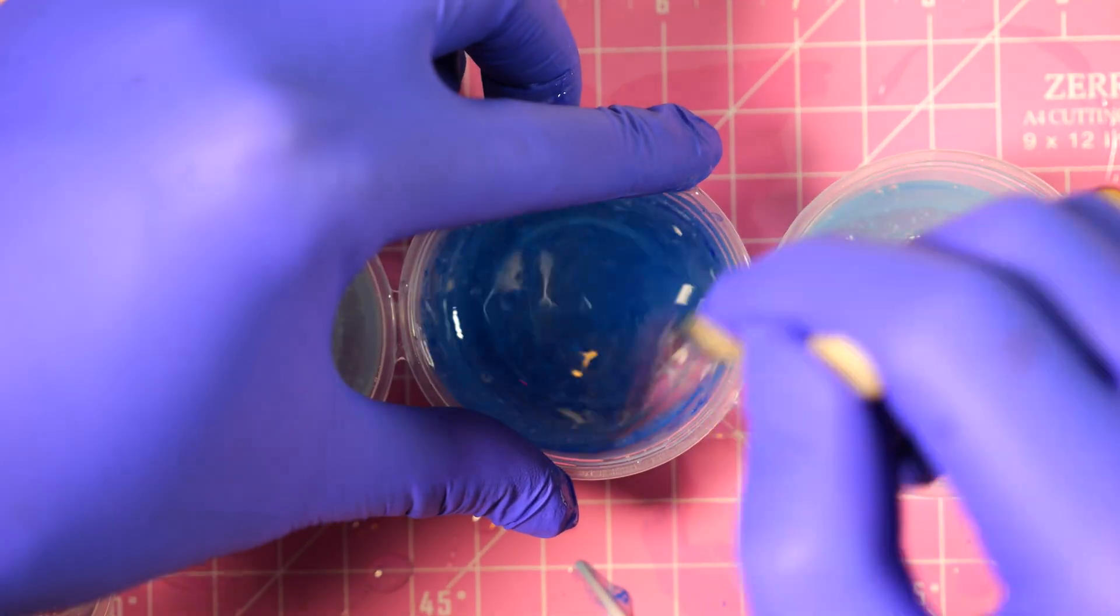Next, I made four different shades of blue and filled it inside my silicone mold. We let it cure under the UV lamp.